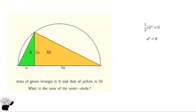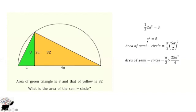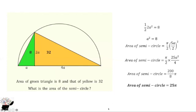Now, what is the area of the semi-circle? It's pi divided by 2 times the radius squared. The radius is A plus 4A divided by 2, which gives us 5A over 2. So the area of the semi-circle is pi over 2 times (5A over 2) squared. We already know A squared equals 8, so substituting we get pi over 2 times 25A squared over 4, which gives 25 times 8 divided by 8 times pi — and the final answer is 25 pi. The area of the semi-circle is 25π.